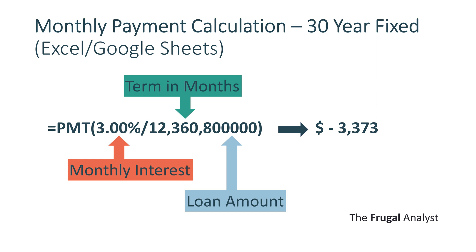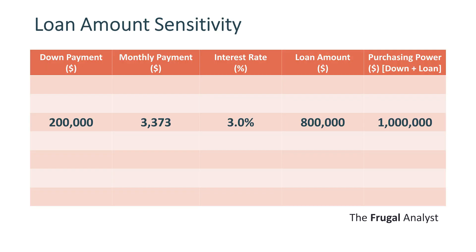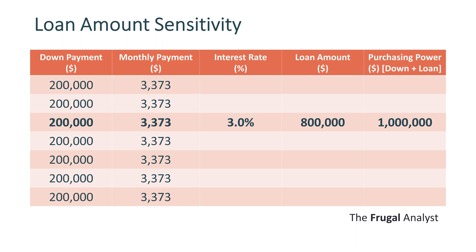Now let's put this into a table to see the sensitivity between different interest rates. The table has the down payment, the monthly payment, the interest rate, the loan amount, and the total purchasing power. Purchasing power is the down payment plus the loan amount. Let's assume that the down payment and the mortgage payment is what the buyer can afford — nothing more and nothing less. The only thing that's changing is the interest rate.